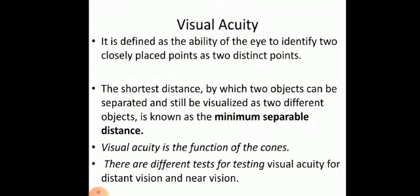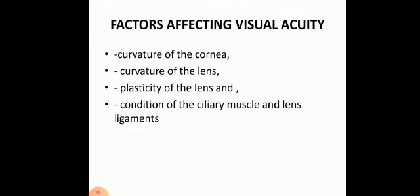Visual acuity is a basic function of the cones, and there are different tests for testing visual acuity for both distant vision and near vision. The factors affecting visual acuity are divided into three categories: optical factors, retinal factors, and stimulus factors.